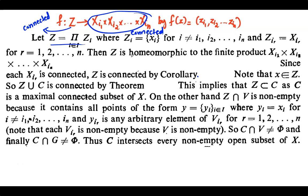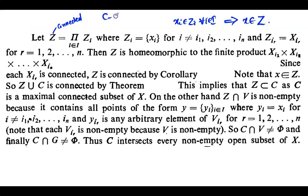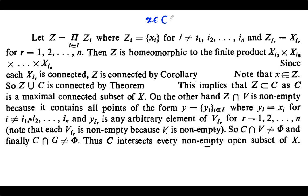From the definition of Z, note that the ith coordinate xi of the point x belongs to Zi for every i, since Zi equals the singleton {xi} for i not equal to i1, i2, ..., in, and Zir = Xir. Therefore x belongs to Z. We know that C is the component containing x, hence x ∈ C also. Thus x is a point common to both C and Z, where both sets are connected, so C and Z are two connected sets which are not mutually disjoint.